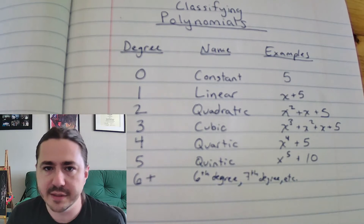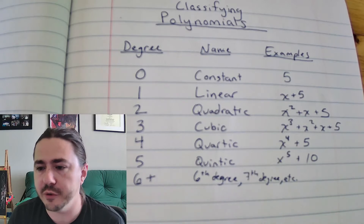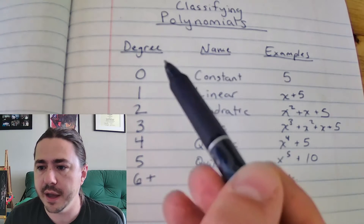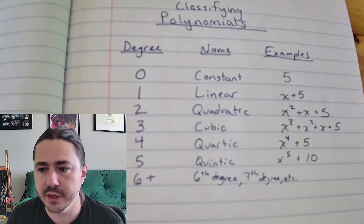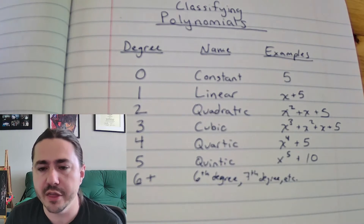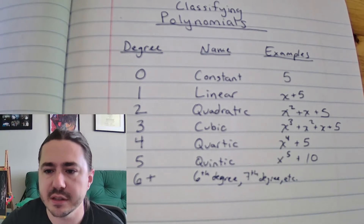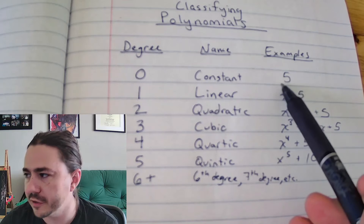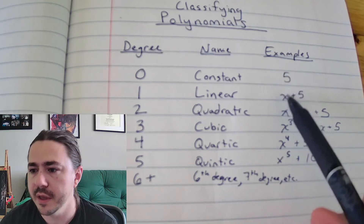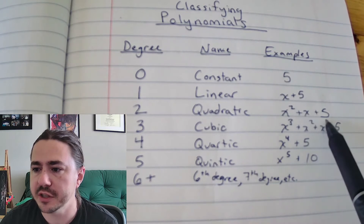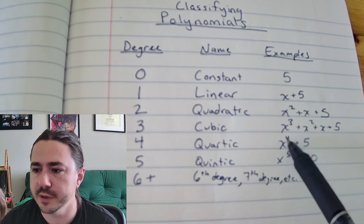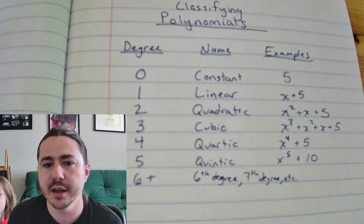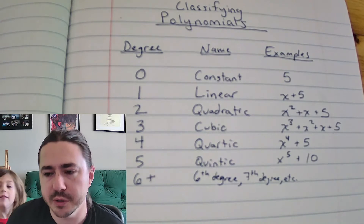So as I said at the beginning, there are two different ways to classify polynomials — one is by the degree, and the other way is based on how many terms there are. Notice how this expression has one term, this one has two terms, this one has three, this one has four, and so on. Based on how many terms there are, we can also name the polynomial something different.